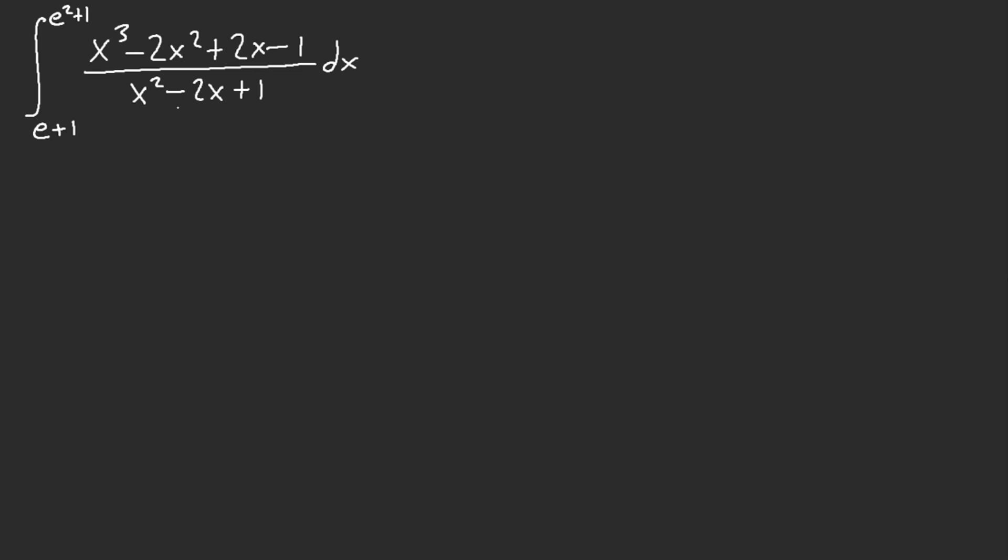So we have x squared minus 2x plus 1. What I'm going to do is I'm just going to simply go like this, so I would want this technically, but what do I need? I'm going to need the, let's see, plus x. So I need to convert it in this, and then my leftover is going to be, let's see, I have plus x, and I'm going to have another x minus 1.